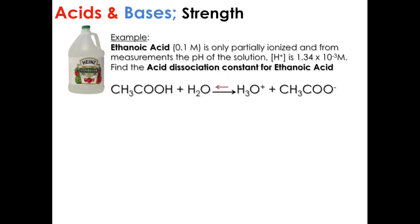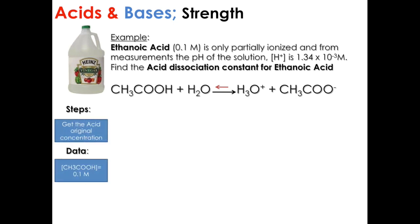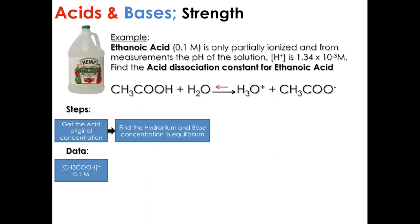Here is the reaction. The steps: First, get the acid's original concentration. From the data, we know that it is 0.1 molar. Then, find the hydronium and base concentration in equilibrium — these are the two products. Both products have the same concentration: 1.34 times 10 to the negative 3.